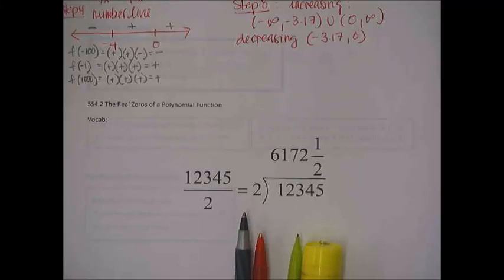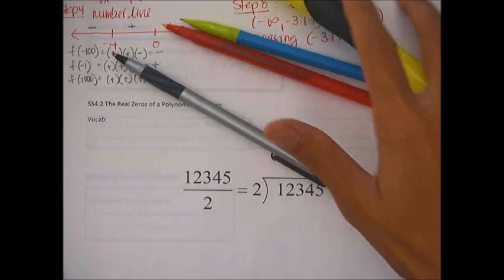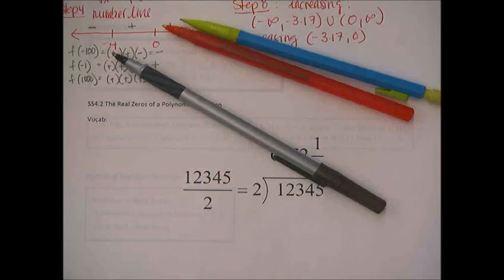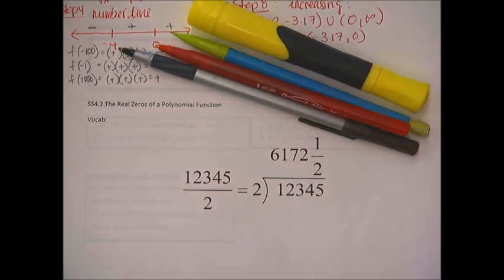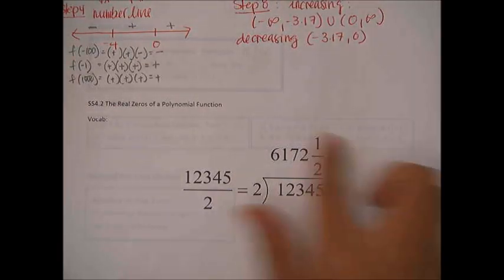We're going to start with section 4.2, titled 'The Real Zeros of a Polynomial Function.' We'll need a highlighter because we're going to be highlighting a lot of important key concepts and vocabulary.